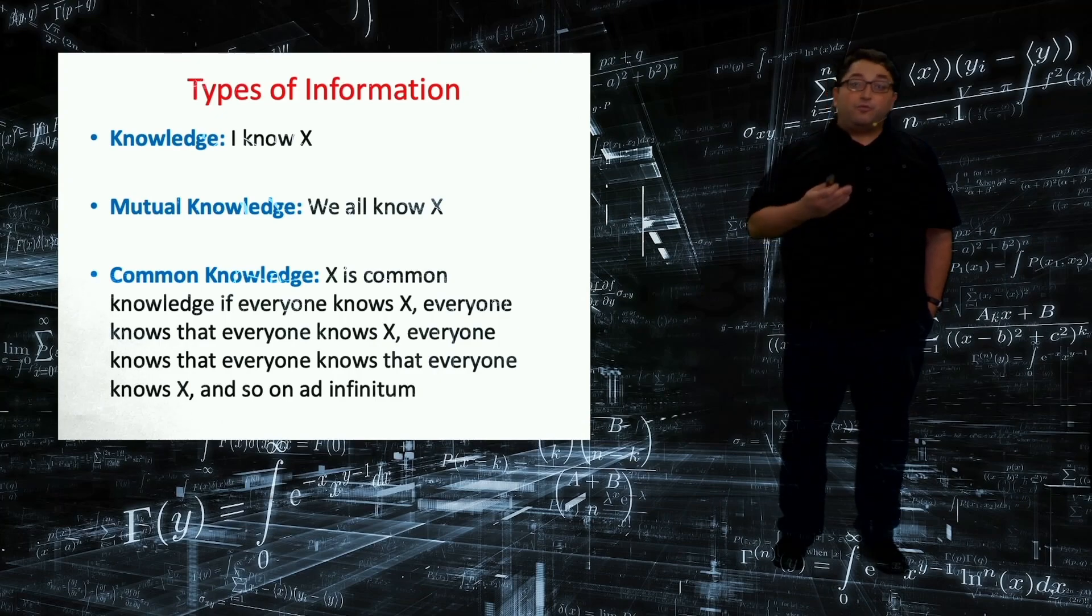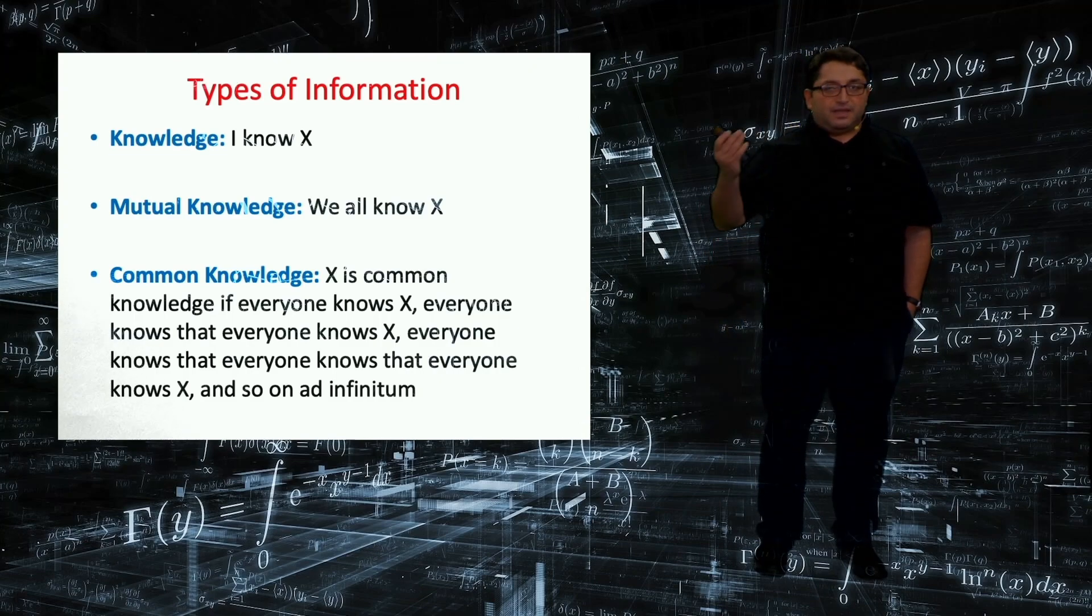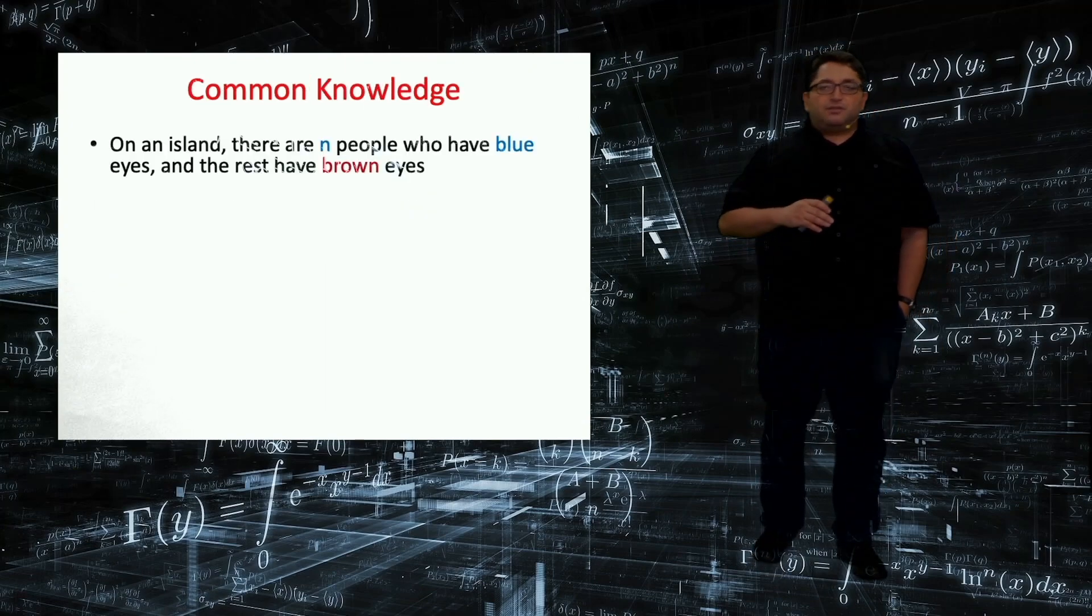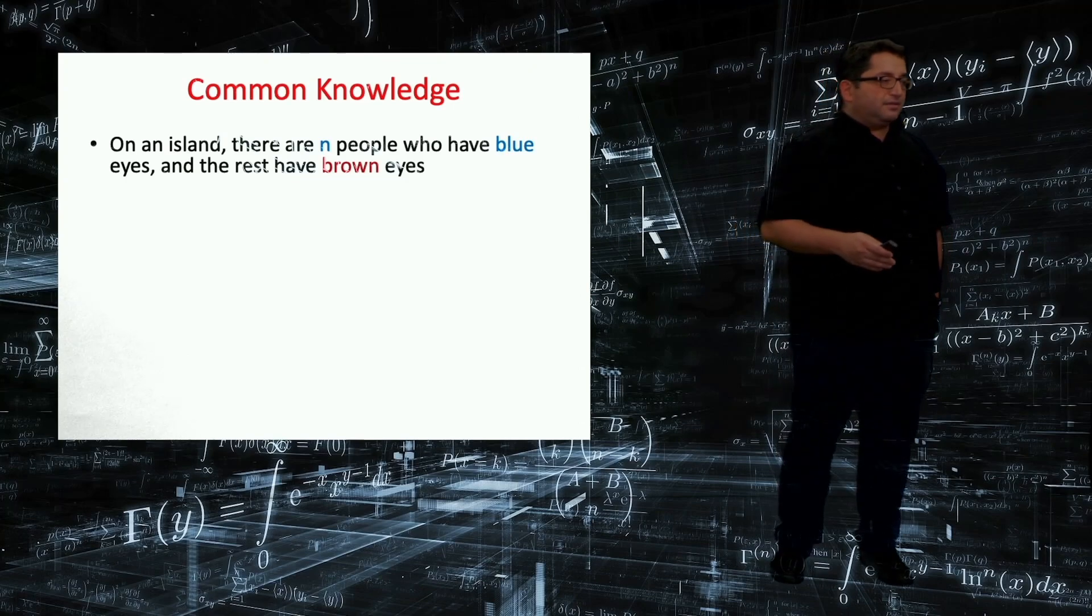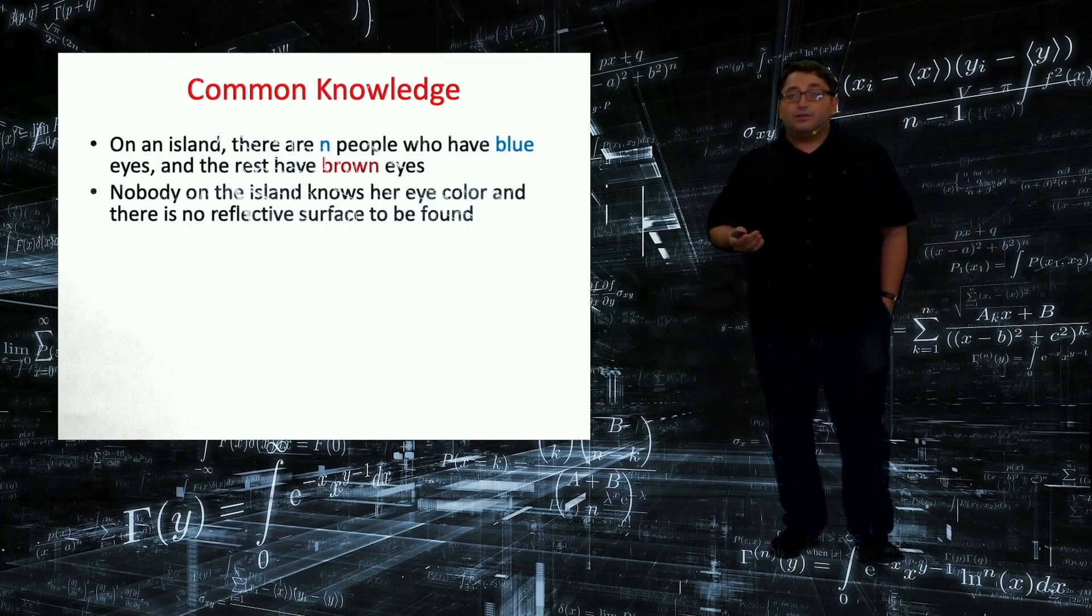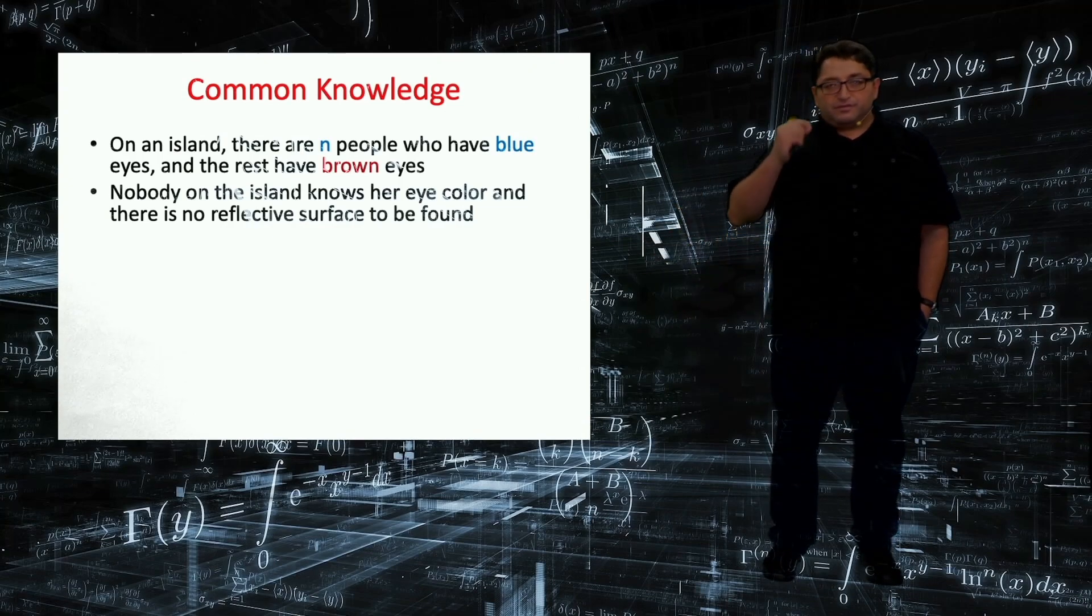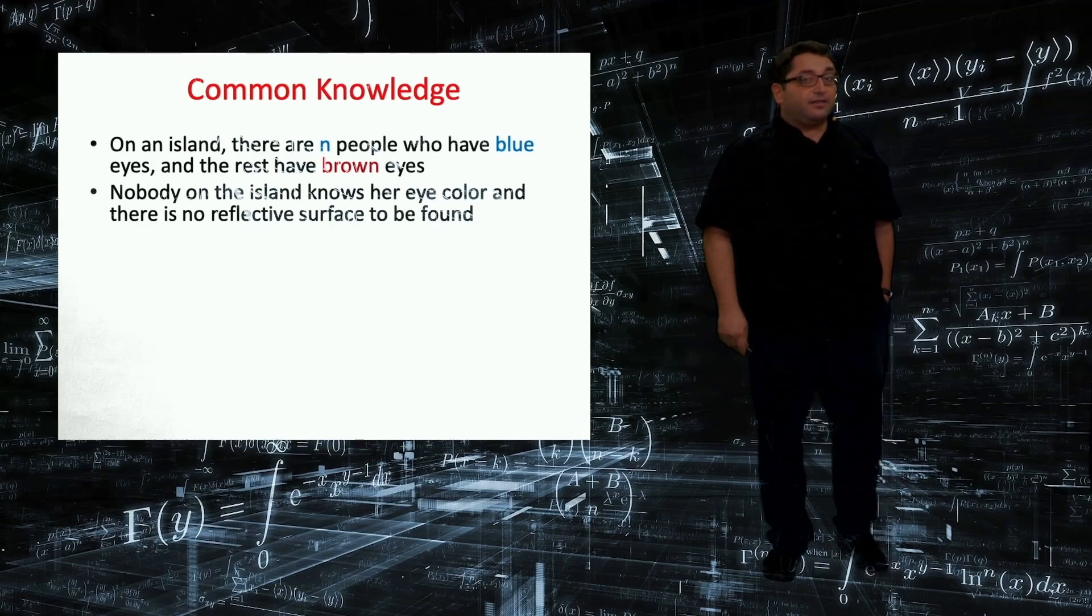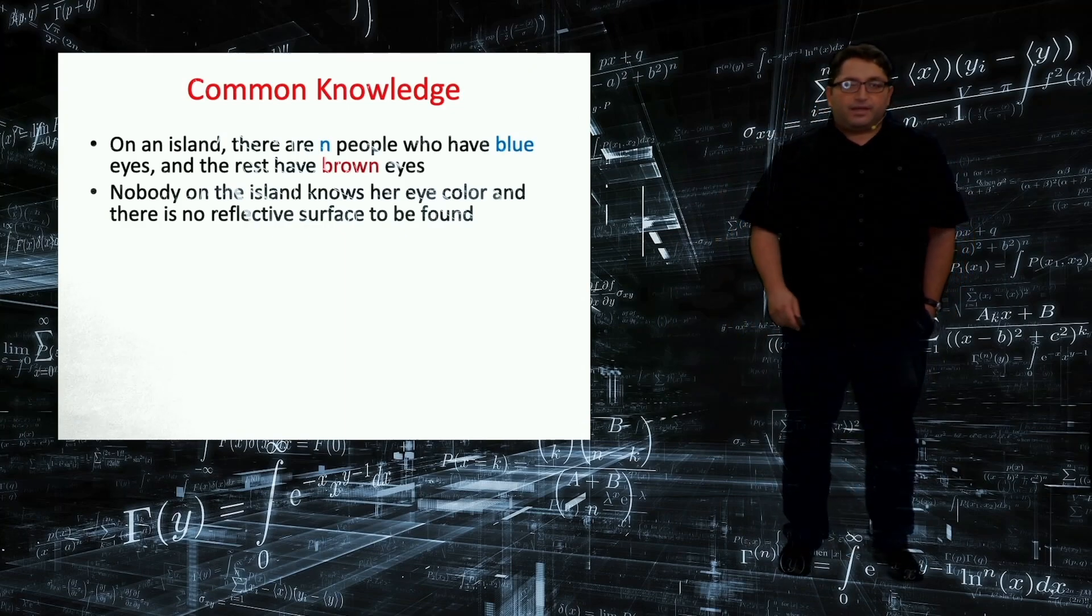In order to judge how weak or strong this axiom is, I would like to introduce an example which is sort of a puzzle, some induction puzzle. So imagine a remote island in which there are n people with blue eyes and the rest of the people have brown eyes. But the thing is, nobody on the island knows her own eye color. And you are not allowed to talk to other residents of the island to find out what eye color you have. Or there is no mirror or any other reflective surface on the island.